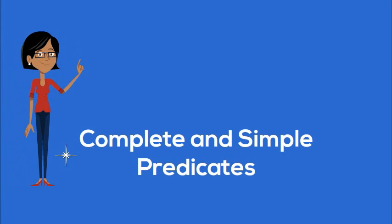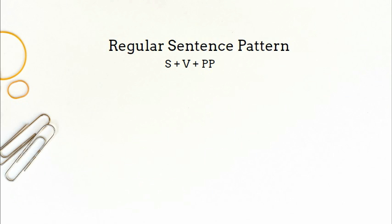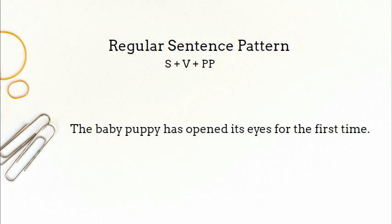Let's take a look at some strategies that you need to know for identifying complete and simple predicates. We will begin with a sentence that follows a regular sentence pattern, S plus V plus PP.